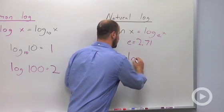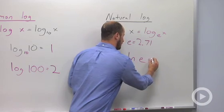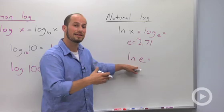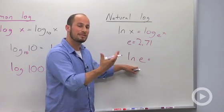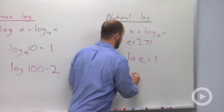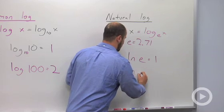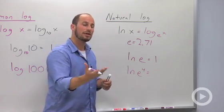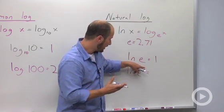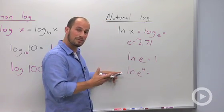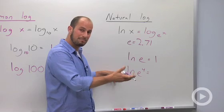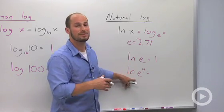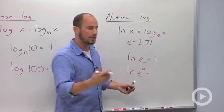So ln of E — this is just saying log base E of E. When those two numbers agree, this is always going to be 1. ln of E to the fourth: you could use the laws of exponents and bring the 4 around if you wanted to, so then you have 4 times ln E, 4 times 1, equals 4. Or just know that this is saying E to what power is equal to E to the fourth — it's just going to be 4.